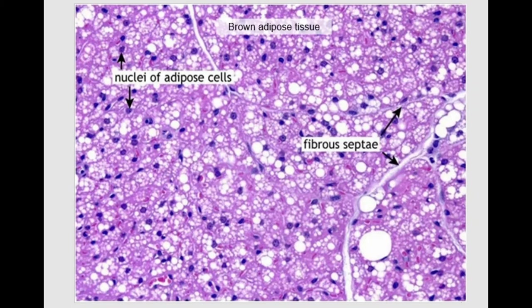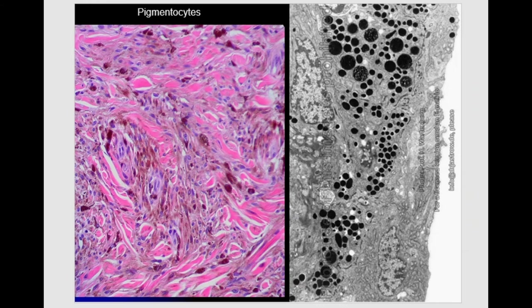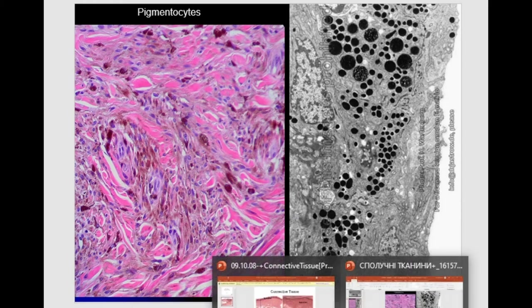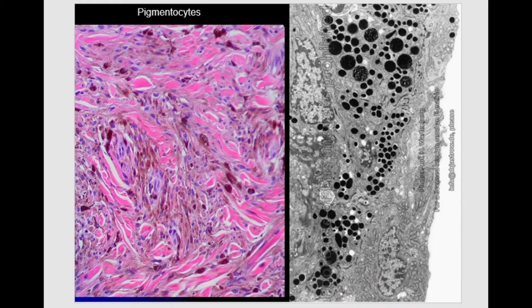The next cell type is pigmentocytes, or pigment cells. Single pigment cells can be present in different places in the connective tissue throughout the human body. A large number of pigmentocytes together compose connective tissue with special properties — the pigment tissue. Their main function is the production of melanin, which is accumulated in cytoplasmic pigment inclusions. Known types of pigment inclusions are melanin and lipofuscin, but here we are talking about melanin, which provides coloration of the skin, eyes, and hair.